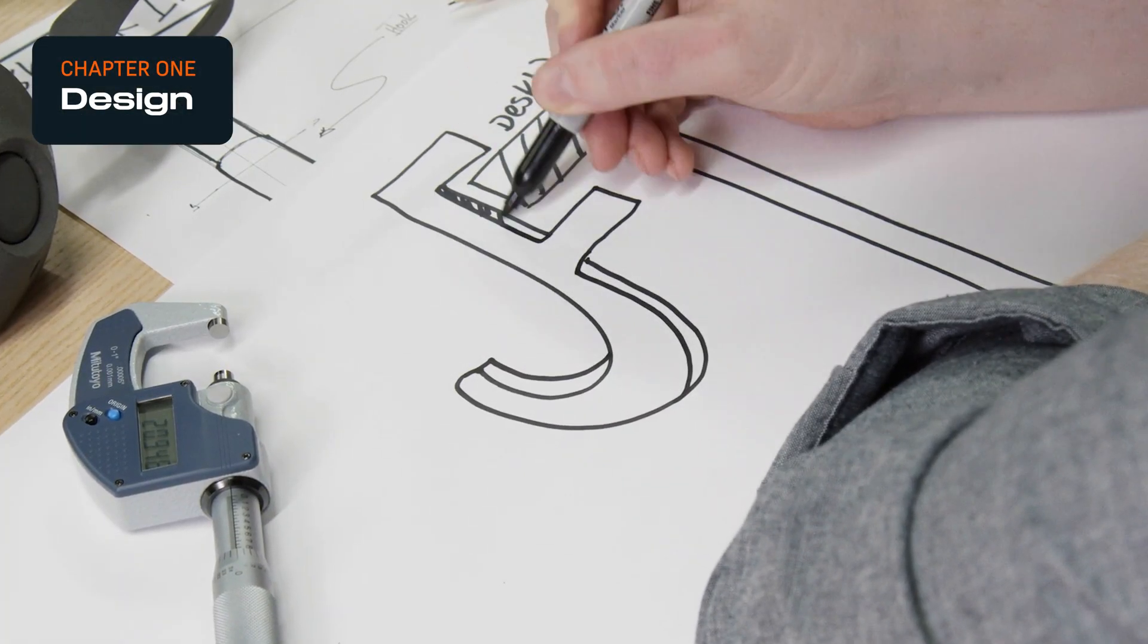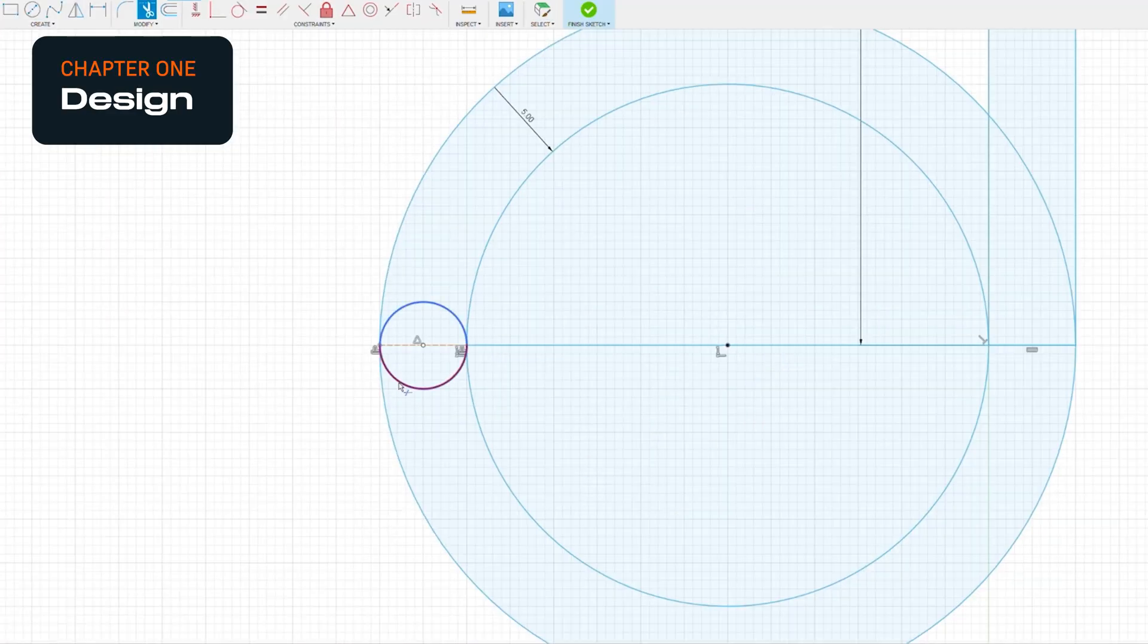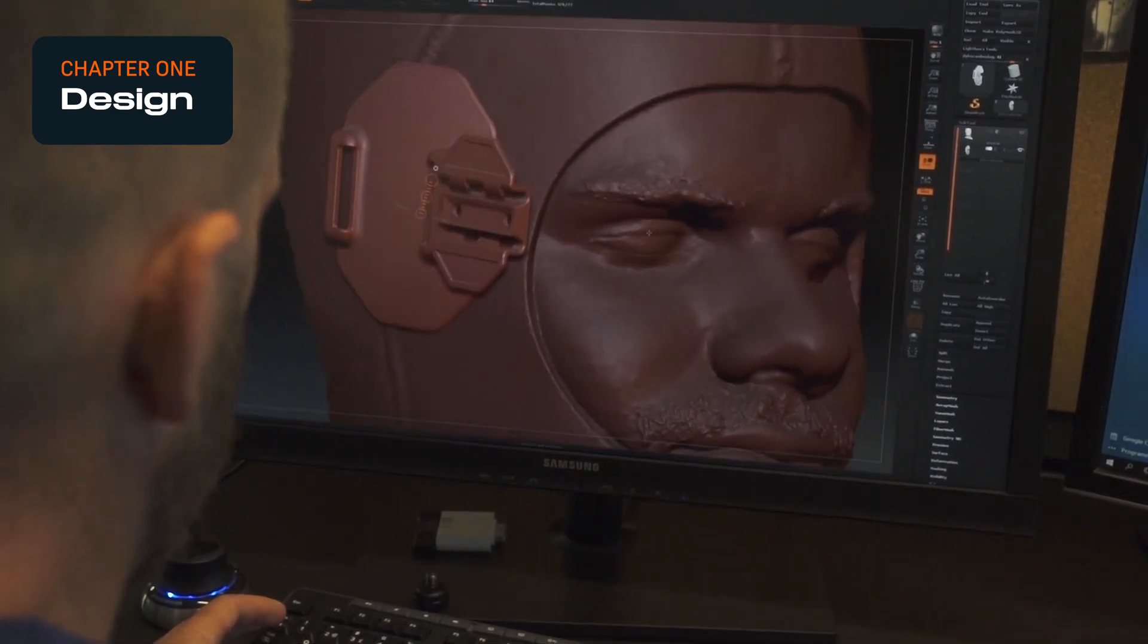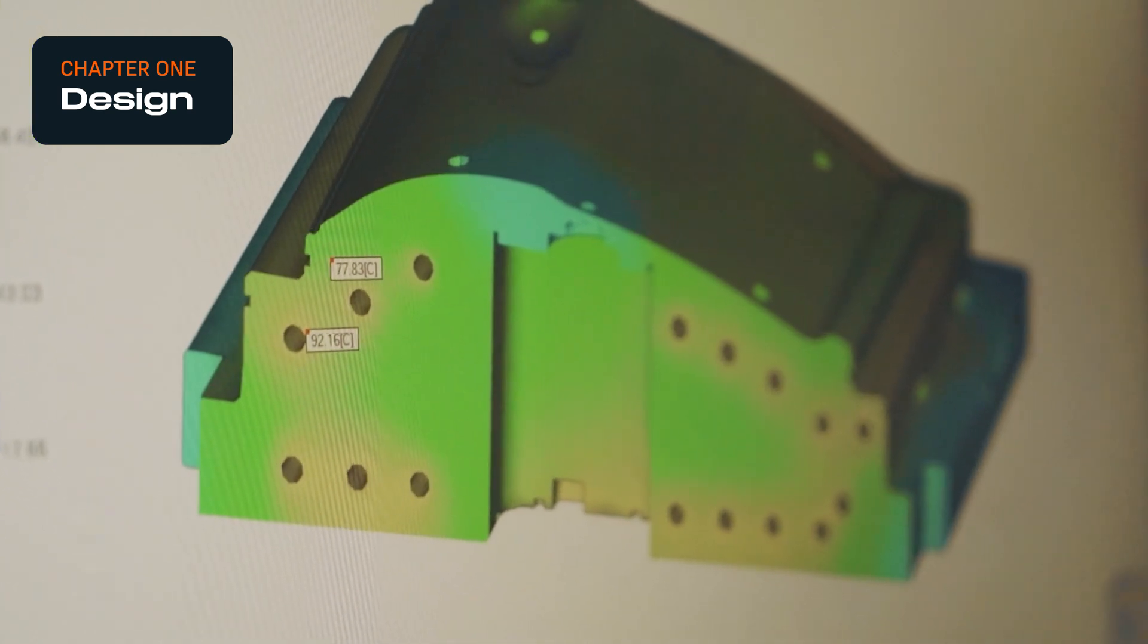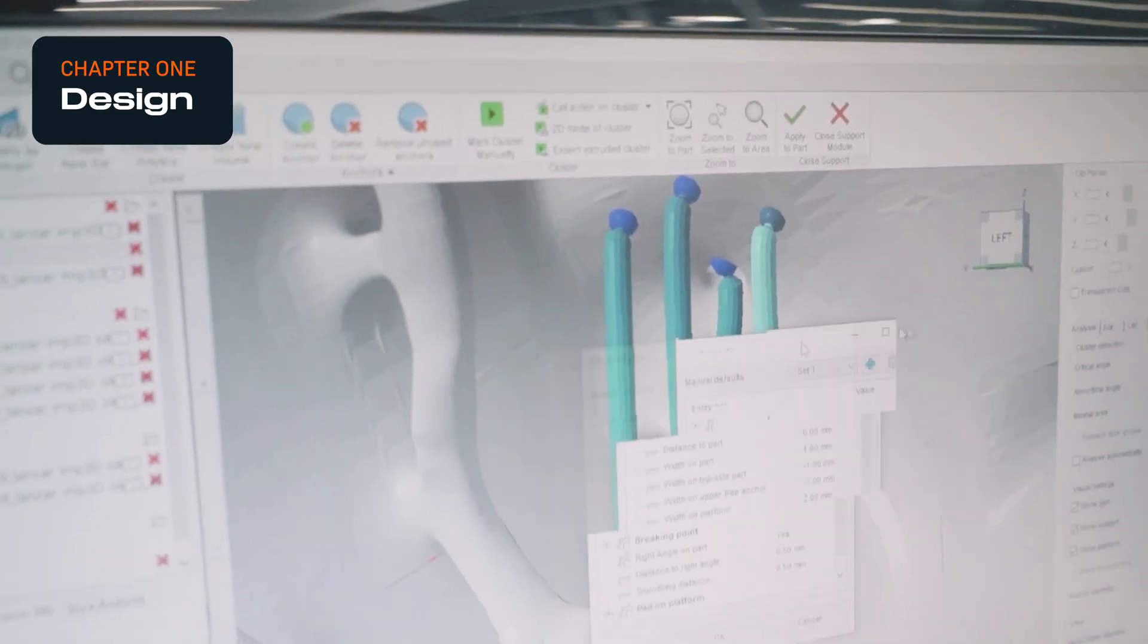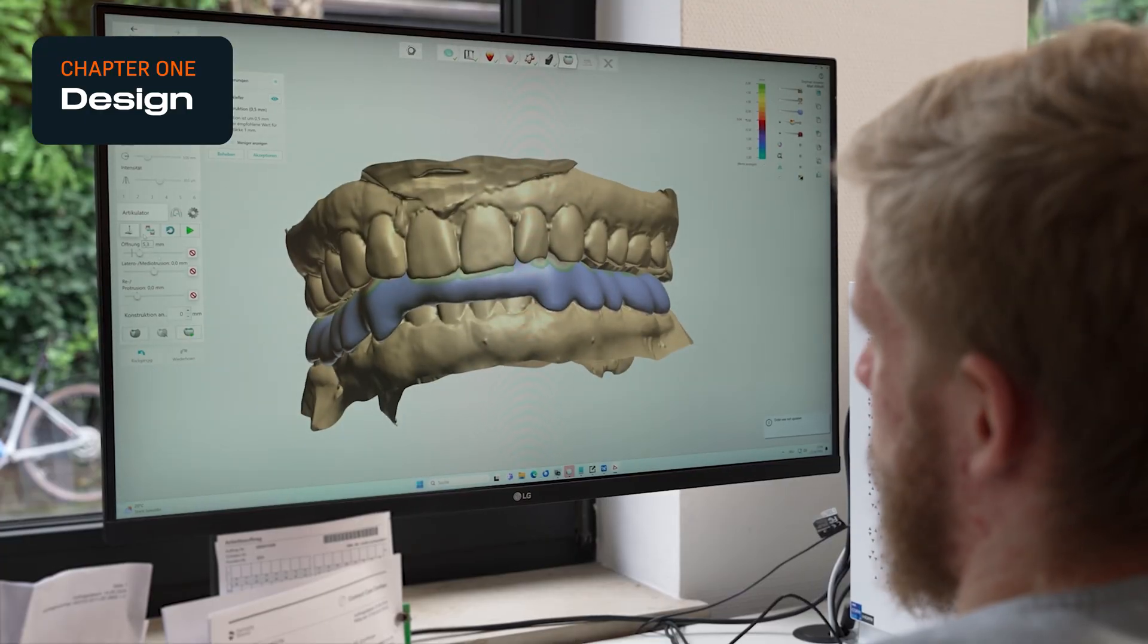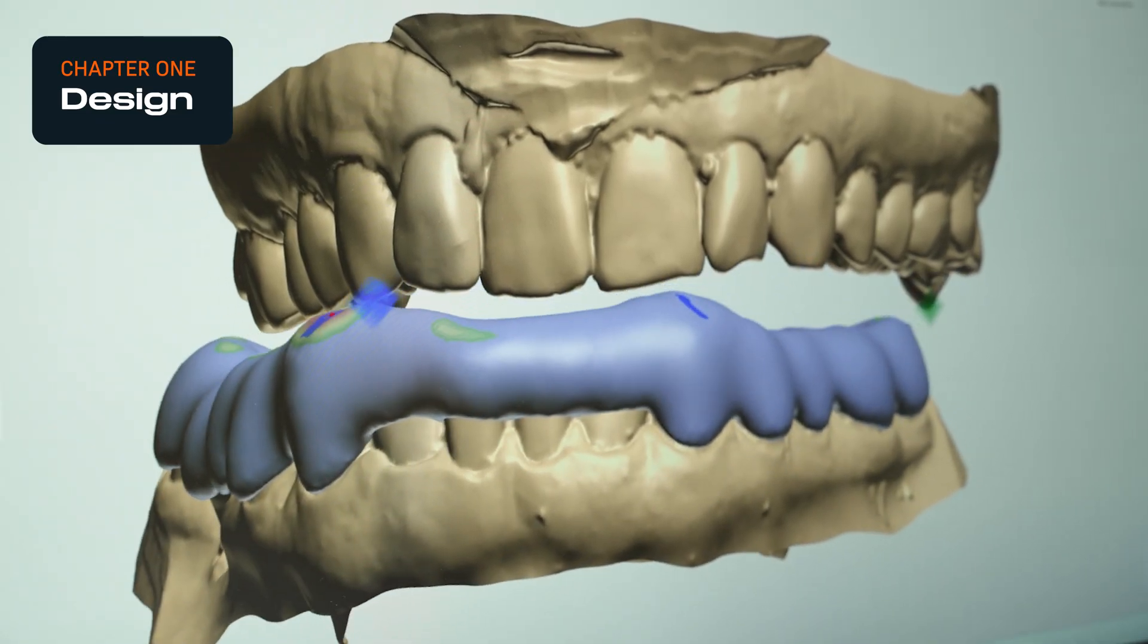Before you start a print, you need a detailed 3D model of your part. CAD modeling is a skill that takes time to master, but 3D design software is much easier to use than it was a decade ago, and there are more and more custom tools for specific workflows that don't require hands-on design skills.